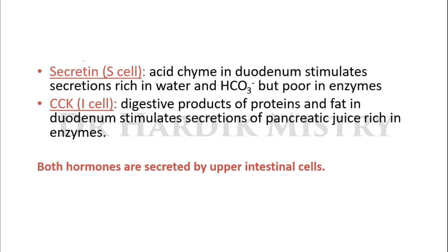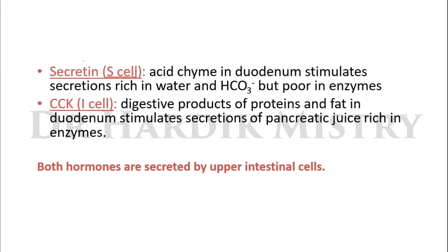Secretin is released from the S cells of the duodenal or small intestinal mucosa. Acid chyme in the duodenum stimulates secretions rich in water and bicarbonate but poor in enzymes. So whenever acid chyme enters the duodenum, it stimulates secretions rich in water and bicarbonate but poor in enzymes. The stimulus for the release of secretin hormone is the acid chyme.